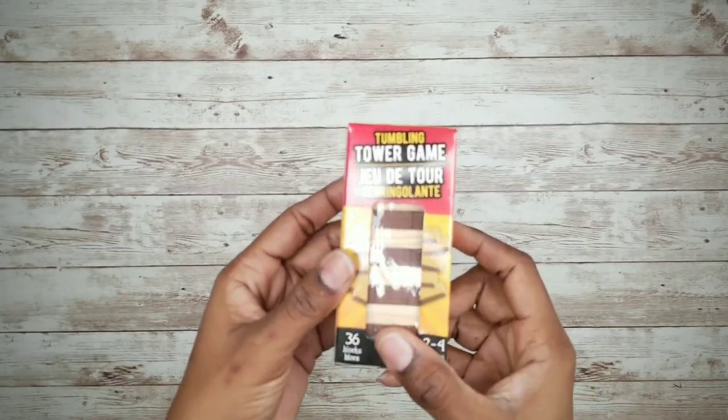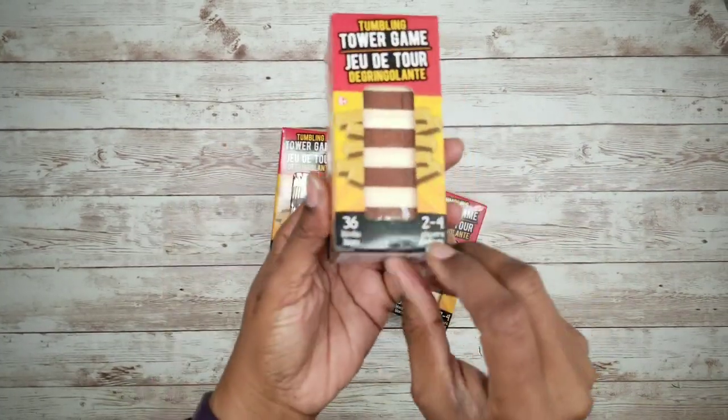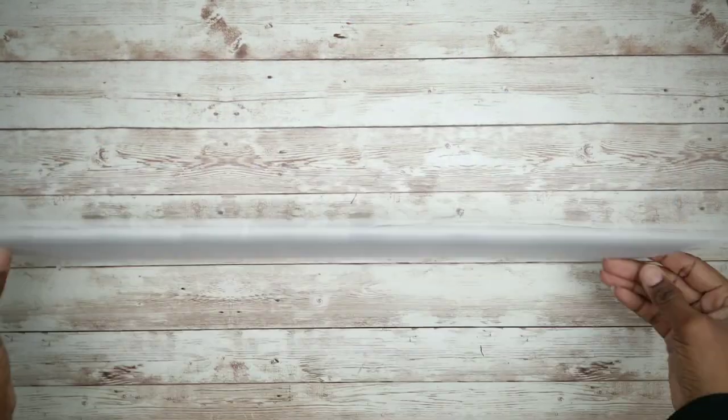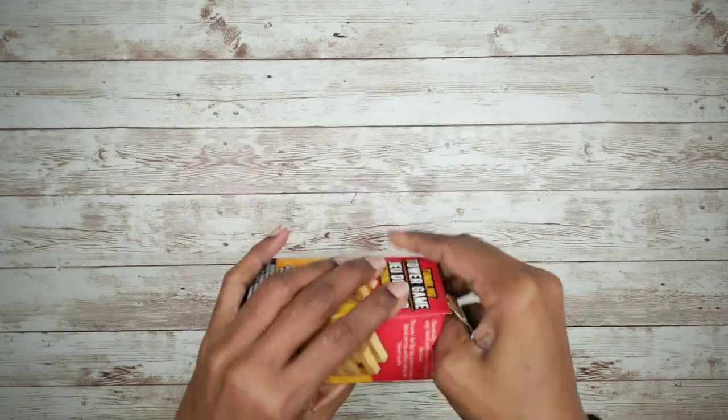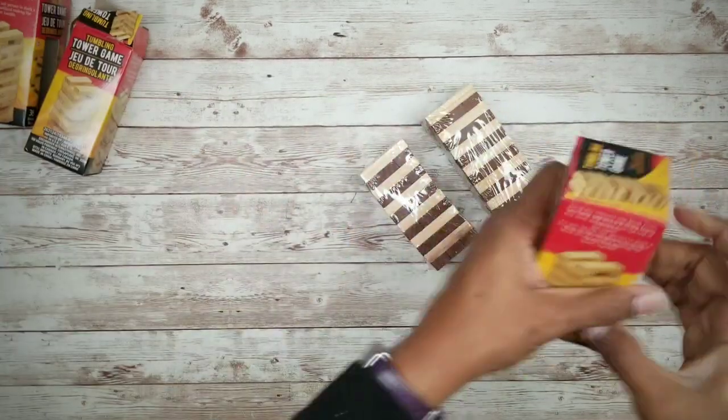For this project, you will need four boxes of these tower game blocks from the Dollar Tree and a piece of foam board that you will use for the base. You want to start by opening all the blocks and removing all of your packaging.